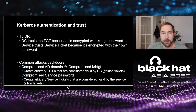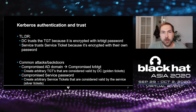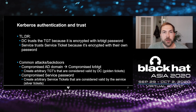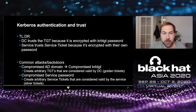In most cases, only the DC will know the passwords. There are some common attacks and backdoors that abuse this. If your AD is compromised, an attacker can dump the password and create their own tickets — these are called golden tickets, and you can create a ticket containing any information you want. If you compromise the service password, you can create silver tickets, which are encrypted with the password of the service you're authenticating to.